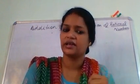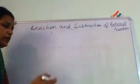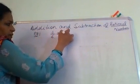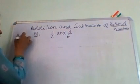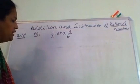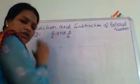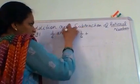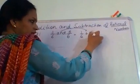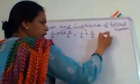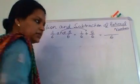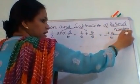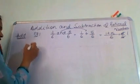So let's take Example 1: add 1/6 and 5/6. These are two positive rational numbers. Since the denominators are the same, I write 1/6 + 5/6, keep the denominator as 6, and add the numerators: 1 + 5 = 6. So the answer is 6/6, which equals 1.